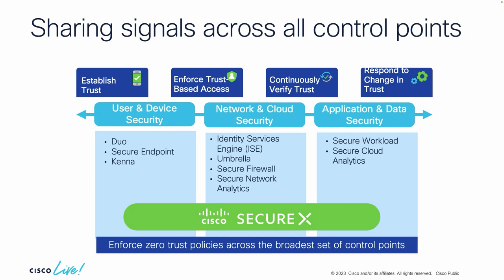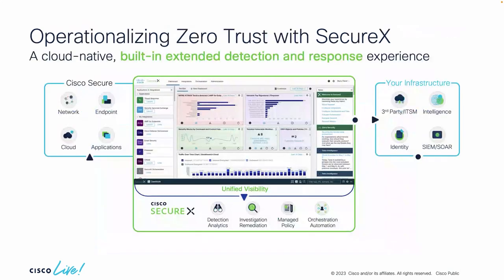From a Cisco perspective, depending on what you're trying to protect, there are different control points and tools. The key idea is this is where SecureX comes into play and where APIs come into play — these things have to share signals with each other across the board. Otherwise, you won't have true zero trust outcomes or the visibility that is key to achieving this outcome. So, a little primer on SecureX — is there anyone already using SecureX? Have you heard about it?